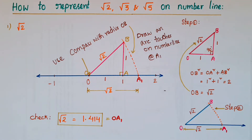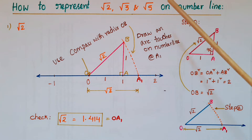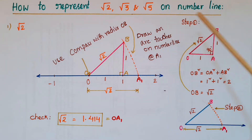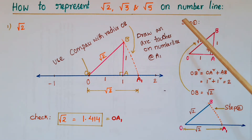Hello everyone. Today I am going to show how to represent irrational numbers root 2, root 3, and root 5 on a number line.